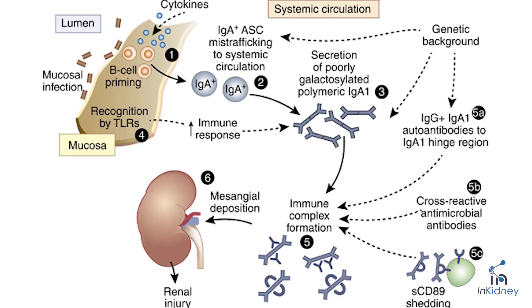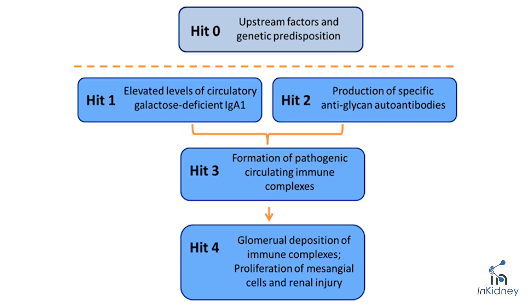Not everybody will form this abnormal IgA — that really depends on the genetic background of the person. So there's a trigger, there's a genetic background, and together, inflammation in the gut can end up producing abnormal IgA that ends up circulating in the blood. The body then starts producing immune complexes, defending itself against this abnormal IgA that it recognizes as a foreign molecule. Those complexes end up depositing in the kidneys, causing inflammation and scarring, and end up with kidney disease.